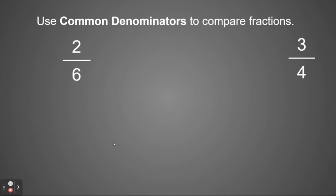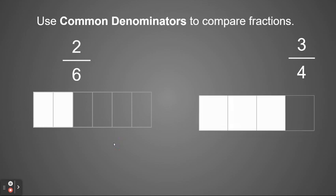Let's try another problem. If I have 2 sixths and 3 fourths, I'm going to find a common denominator for 6 and 4. I'm going to use a picture for this. So I have 2 sixths and I have 3 fourths.